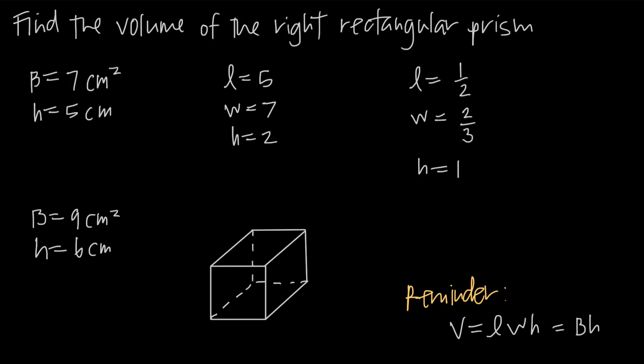In this video, we're talking about how to find the volume of a right rectangular prism. And when we say right rectangular prism, again, we're just talking about a three-dimensional object where all sides of the objects are rectangles.